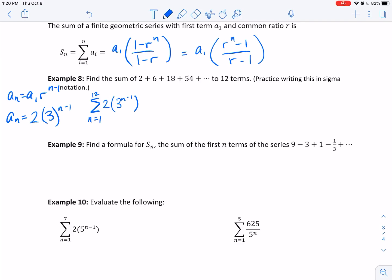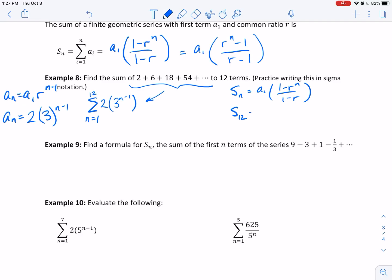Let me get in the zone. So now let's use the formula. The sum of n terms is equal to a sub 1 times 1 minus r to the n over 1 minus r. If you would prefer to use the other formula, by all means, knock yourself out. This is the sum of 12 terms. The first term was 2, our common ratio is 3, and we want that 3 to the 12 over 1 minus 3.